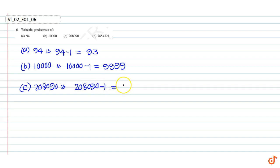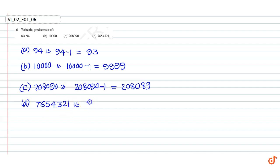equal to 208,089. And the predecessor of 7,654,321 is 7,654,321 minus 1, which is equal to 7,654,320. These are our answers.